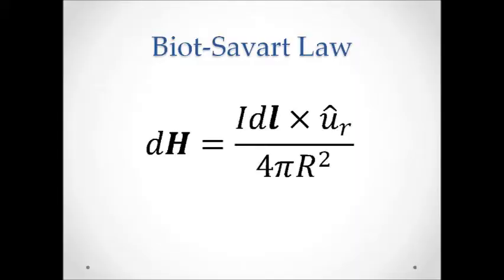To calculate the magnetic field, we use Biot-Savart's law equation, which is shown here. Since this is a differential magnetic field, we would need to integrate this equation over the entire current path to get the total magnetic field at a point.